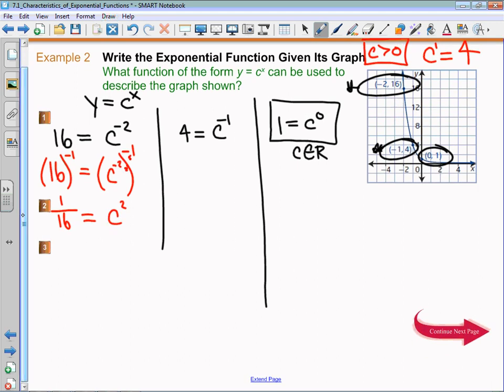So what I'm going to do here, in order to isolate c completely, is I am just going to take the positive square root on both sides. Taking the square root of that fraction is root 1 over root 16. Now we just have c, and I'll put to the power of 1 there, and I get that 1/4th is equal to c.